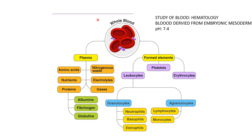Blood is formed of two parts: plasma and formed elements or cellular elements. Plasma contains amino acids, nutrients, and proteins — mainly albumin, fibrinogen, and globulins. It also contains nitrogenous waste, electrolytes, and gases.